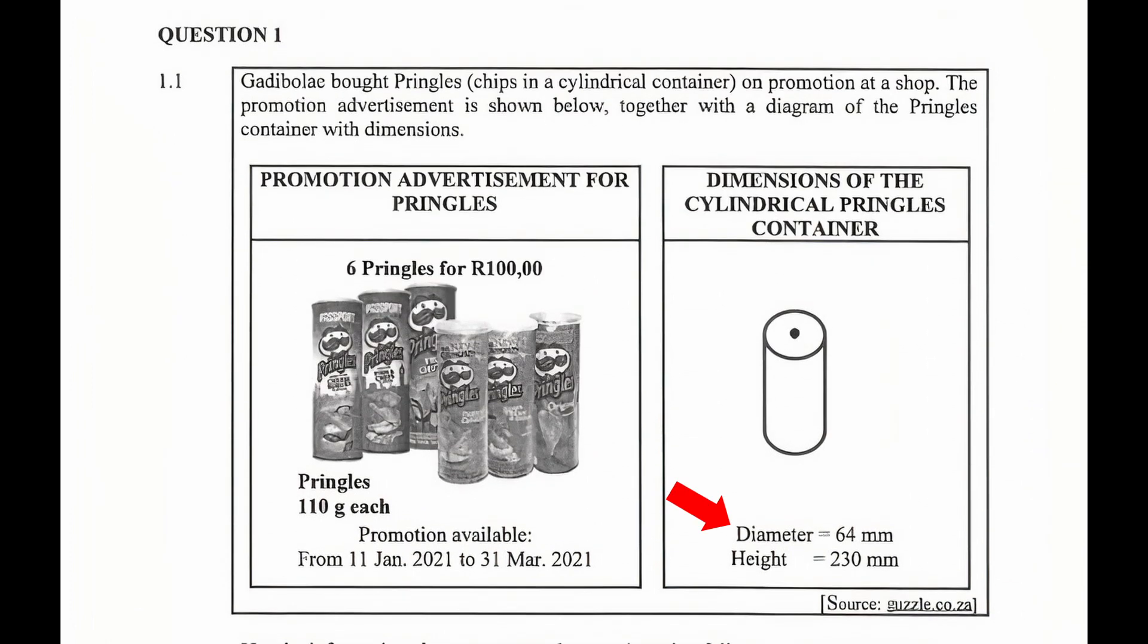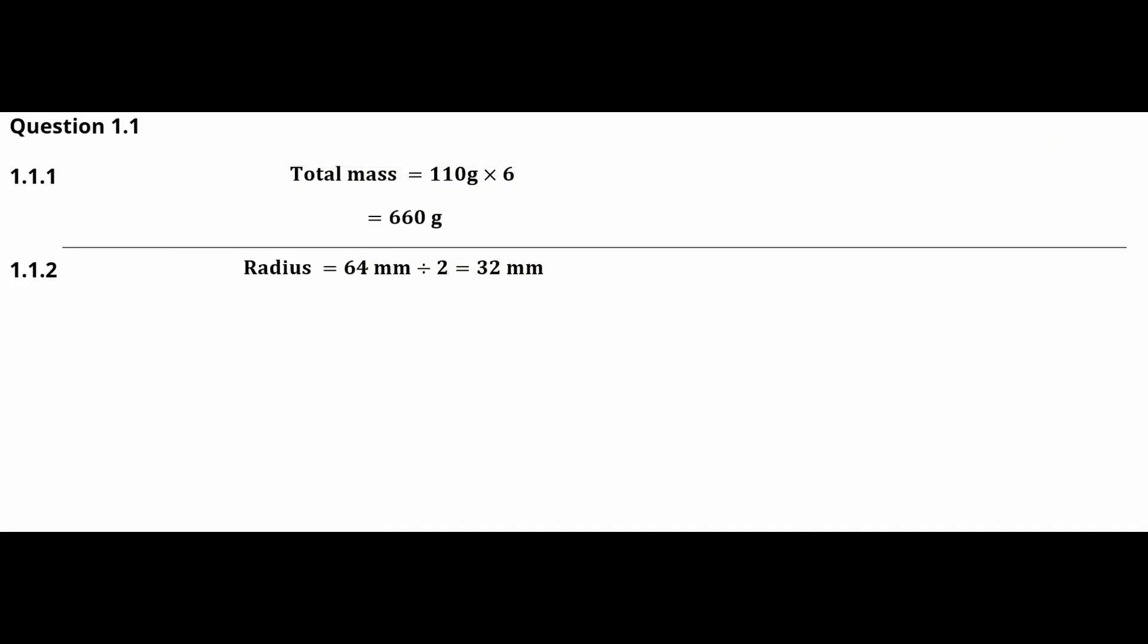From the dimensions of a Pringles container, the diameter of the container is 64 millimeters. We know that the radius is equal to half the diameter, so the radius of a single Pringles container is 64 millimeters divided by 2, and this equals a radius of 32 millimeters.